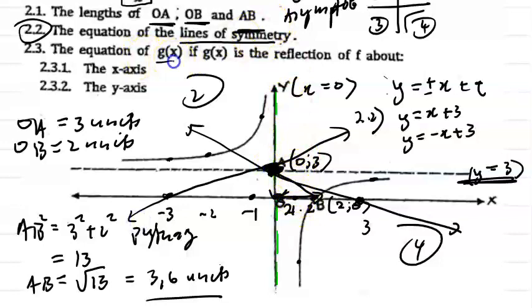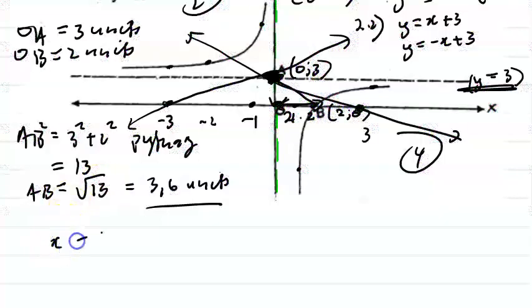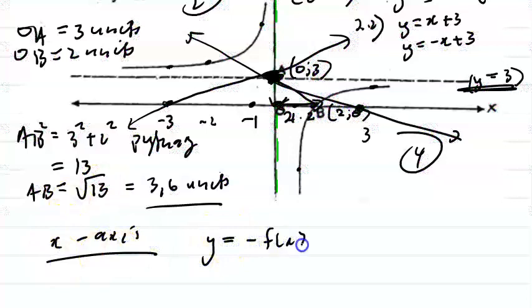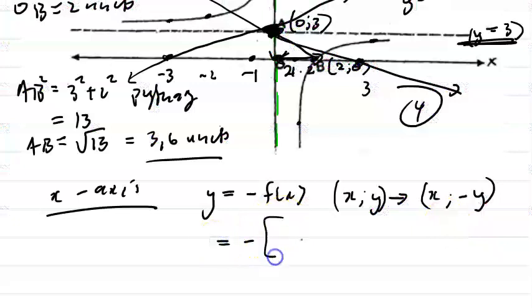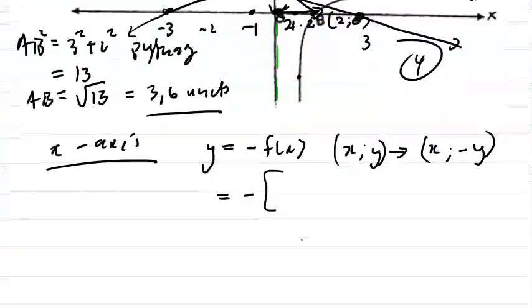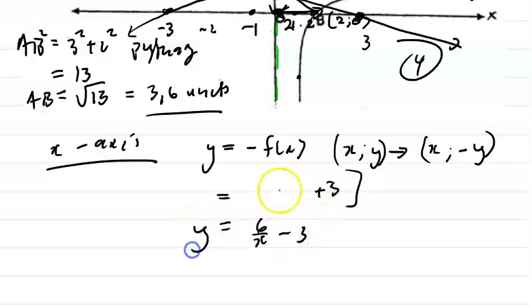Now the equation of g(x), if g(x) is the reflection of f(x) about the x-axis. For an x-axis reflection, the rule is y equals minus f(x), and the transformation rule is (x, y) becomes (x, −y). So you substitute: minus into minus 6 over x plus 3 gives you 6 over x minus 3. Minus times minus is plus, and minus times plus 3 is minus — so that's your transformed graph.